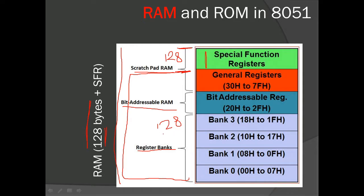In the 128 bytes, register bank 0 starts from address 00H to 07H, meaning we have 8 bytes present. Every byte is assigned to a specific register named R0, R1, R2 up to R7. Address 00H is given to R0, 01H to R1, 02H to R2, and so on up to 07H for R7.